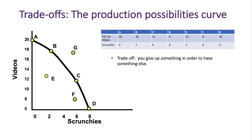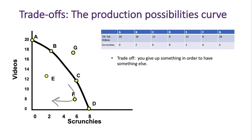Trade-offs are where you give something up in order to have something else. Here on the PPC, when we produce more TikTok videos we are giving up more scrunchies, and the more scrunchies we produce we have to give up some TikTok videos, since we're only producing two goods in this society.